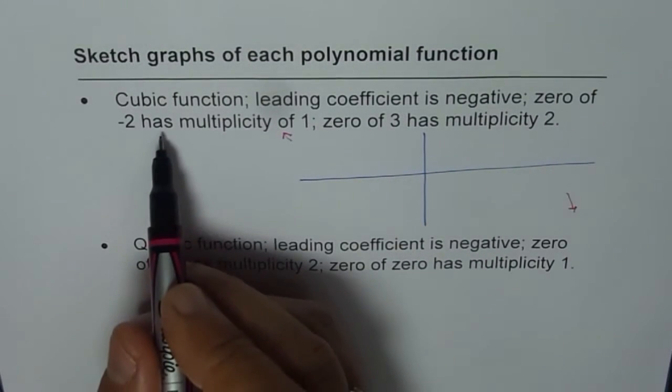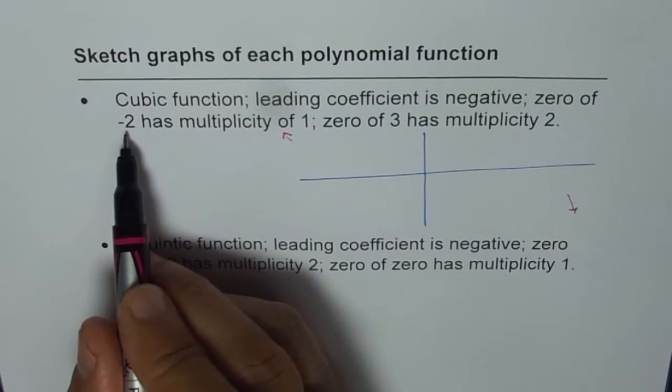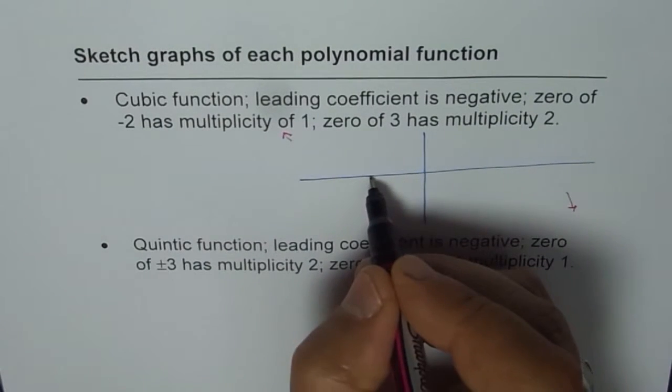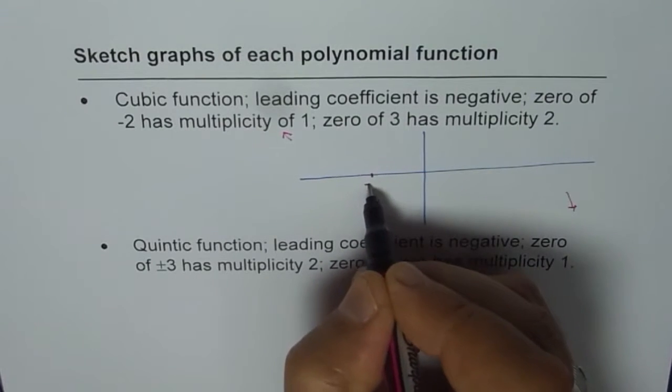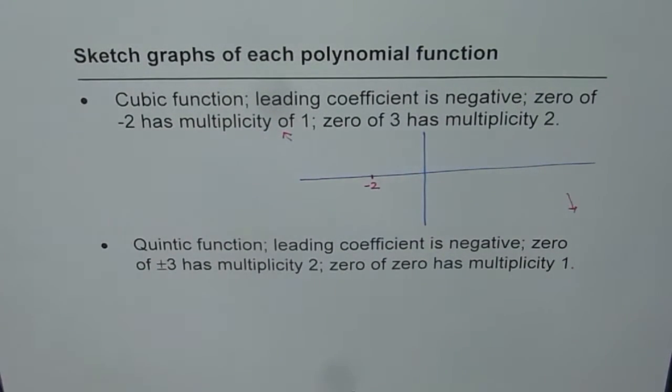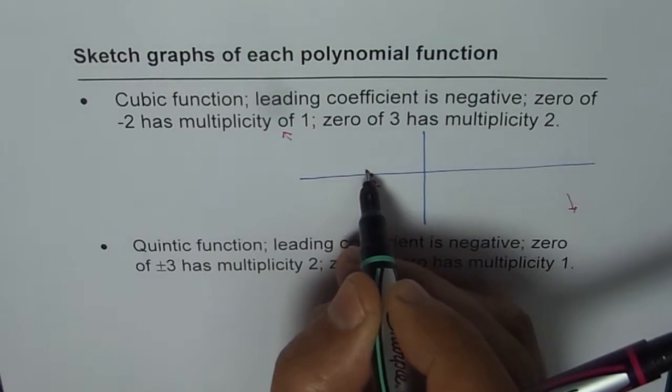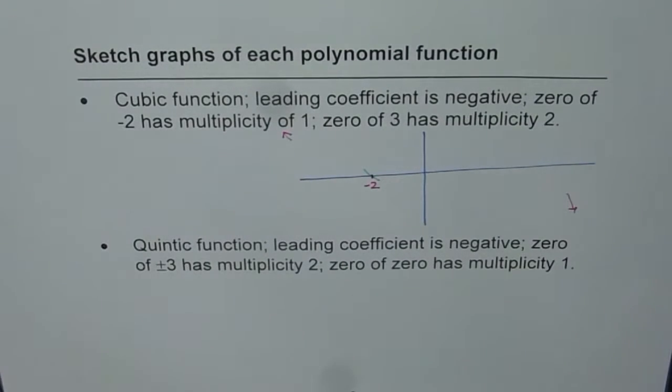Now let's look into the zeros. Zero of minus 2 has multiplicity of 1. That means minus 2, let us say this is minus 2 for us. When we say multiplicity is 1, it means it is a linear zero. So the graph will cross like a line at this point.